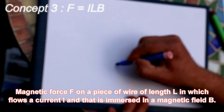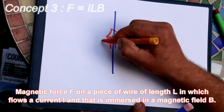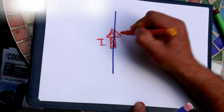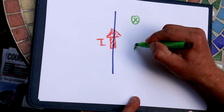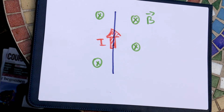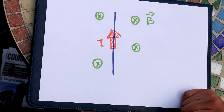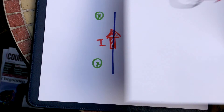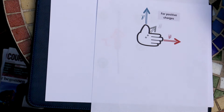The third concept is the idea of a wire in which you have a current flowing in a magnetic field. When this happens, the wire will feel a magnetic force. Again, the hand rule: the fingers will give you the direction of the current — the direction of the charges which are moving — so it's the same concept.